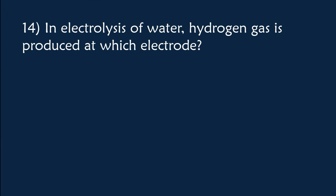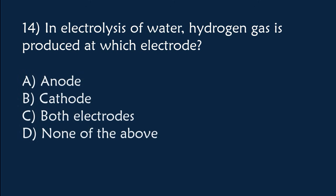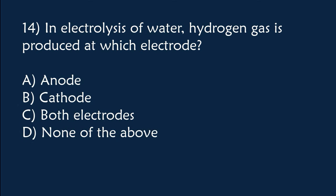In electrolysis of water, hydrogen gas is produced at which electrode? A) Anode, B) Cathode, C) Both electrodes, D) None of the above. The correct answer is Option B, cathode.